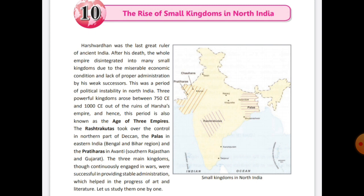These three powerful empires were the Rashtrakutas, the Palas, and the Pratiharas. You can see an image in your book showing the area under these empires. The Rashtrakutas took control of the northern part of the Deccan Plateau; the area of Bengal and Bihar were under the Pala rulers; and the Pratiharas ruled over Avanti, the areas of Gujarat and southwest Rajasthan.